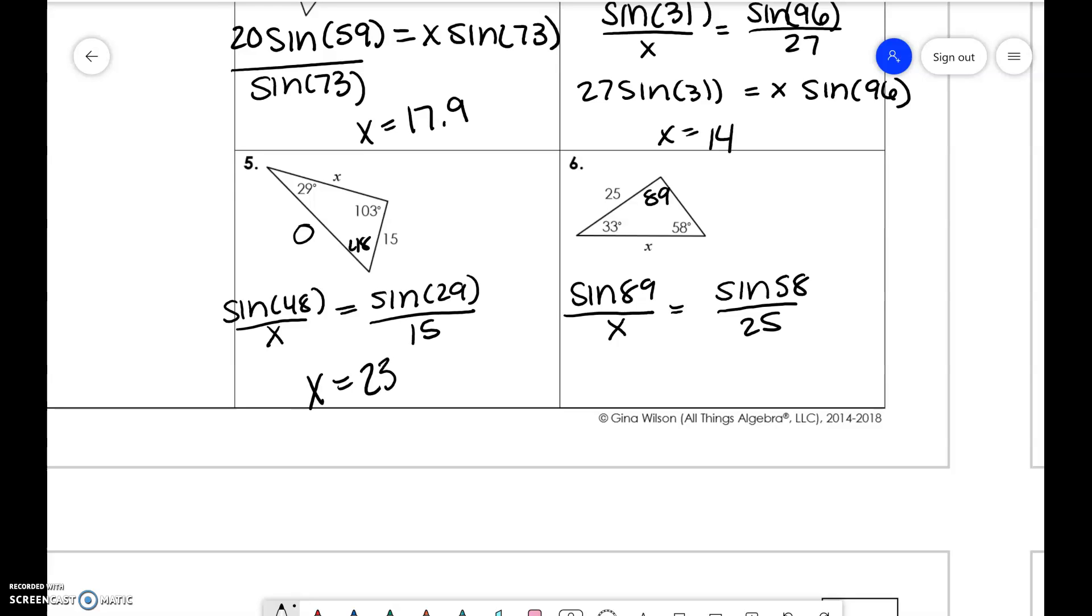25 times sine of 89 divided by sine of 58. So you get x is equal to 29.5.